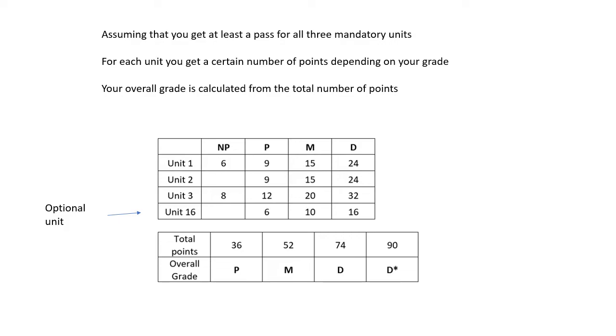For each unit, you get a certain number of points depending on your grade. So, your overall grade is calculated from the total number of points. So, look at this table. I'll show you some examples shortly. So, for unit one, for whatever you get, a near pass or a pass or a merit or a distinction, you get that many points. For example, if you get a merit for unit one, you get 15 points. If you get a distinction for unit two, you get 24 points. If you get a near pass for unit three, you get eight points. And then look at the total number of points there. And that's your overall grade.